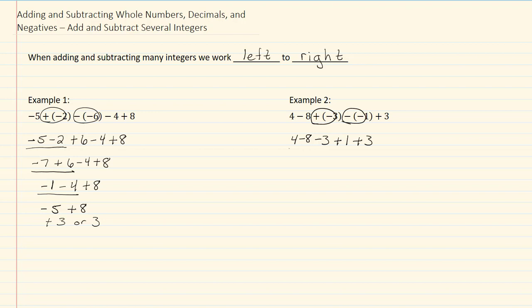Working from left to right, I look at my first two numbers. I have a positive four and a negative eight. Different signs, so I subtract. My larger number is negative, so I get a negative four and then bring down the rest of my numbers.